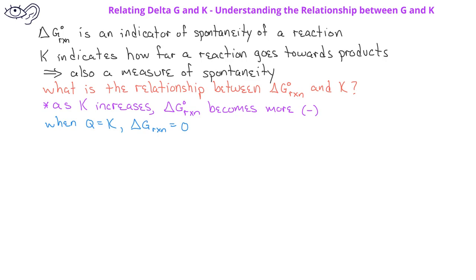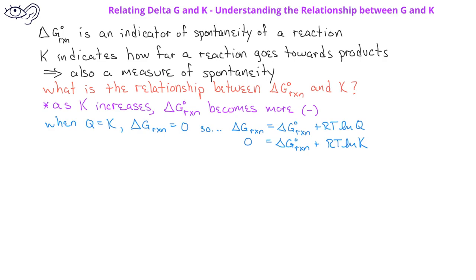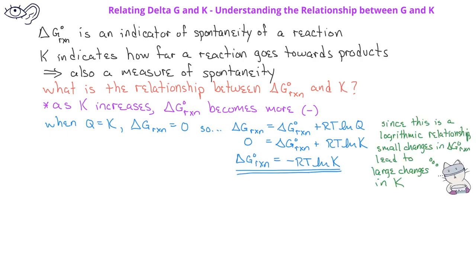So, using an equation we learned in the previous video, the free energy change for a reaction is equal to the standard free energy change for a reaction, plus RTlnQ. When we substitute in the value of zero for the free energy change and K for Q, we have zero equals the standard free energy change plus RTlnK. Rearranging this equation, we get the standard free energy change for a reaction equals minus RTlnK.